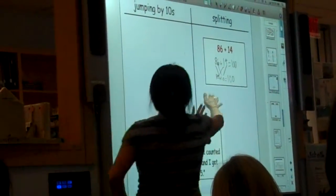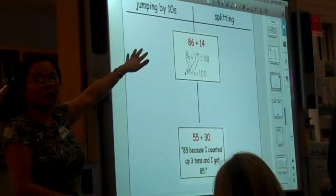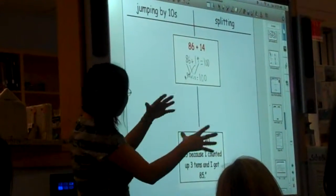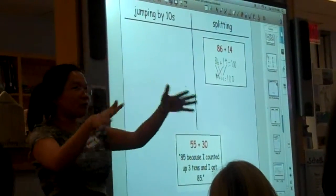And then they go, what strategy is being used here? Looking at, literally, this is their own classmate's work. And they're like, okay, so they'll analyze it and talk about it. And they'll agree that it's splitting because you're splitting both numbers.